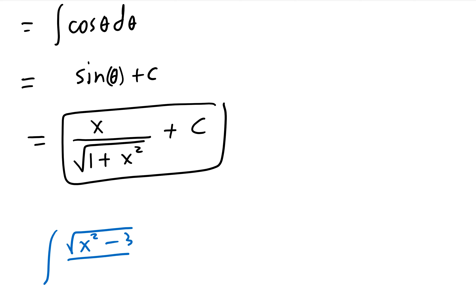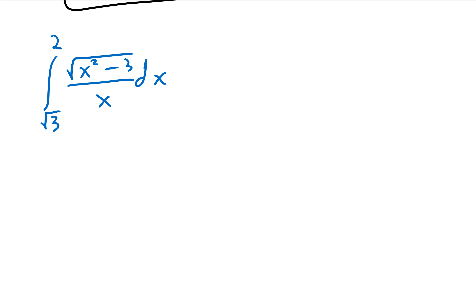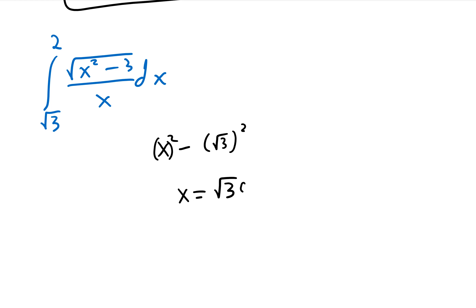Next, let's make it a definite integral from √3 to 2 of dx/√(x²−3). I'll work on the indefinite integral first and apply the bounds at the end. Since x²−3 = x² − (√3)², this matches the form x²−a² with a = √3, so we use x = √3·sec(θ).